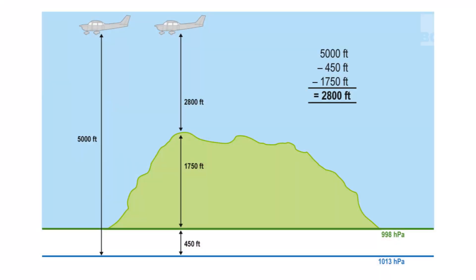Now, if the aircraft is at flight level 50 — 5,000 feet above the 1,013 hectopascal level — and the top of the terrain is 2,200 feet above the 1,013 hectopascal level, then the aircraft's height above the terrain is 5,000 feet minus 2,200 feet, which equals 2,800 feet.